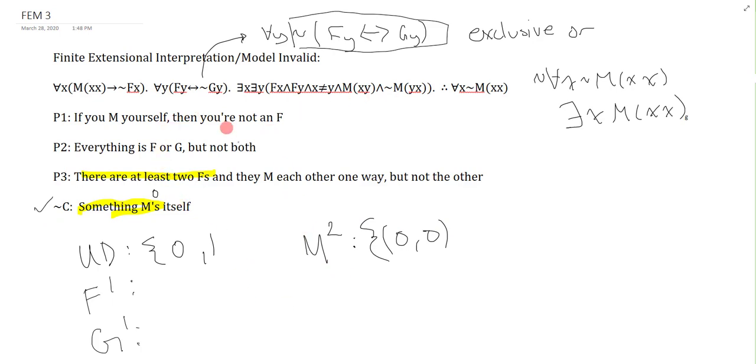Now, if I scan around, I'm just looking for any other information that might matter to what I just wrote down. And premise 1 says, if you M yourself, 0,0, then you're not an F. So this means that 0 is not an F. So I could write no 0 here. But if you remember from premise 2, premise 2 says everything is F or G, but not both. So if 0 isn't an F, it must be G. It just has to be G.